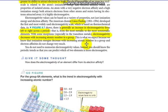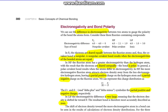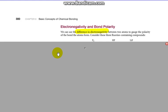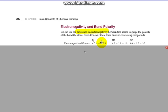For electronegativity and bond polarity, we can use the difference in the electronegativity between two atoms to gauge the polarity of the bond the atoms formed. Consider these fluorine-containing compounds.